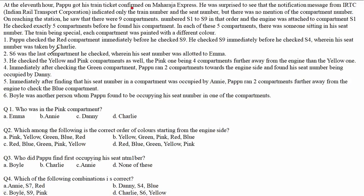At the 11th hour, Pappu got his train ticket confirmed on Maharaja Express. He was surprised to see that the notification message from IRTC indicated only the train number and the seat number — there was no mention of the compartment number. On reaching the station, he saw that there were 9 compartments, from S1 to S9 in that order.